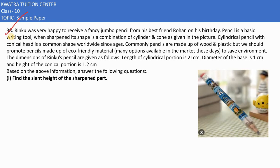Here in the 30th part, it says Rinku was very happy to receive a fancy jumbo pencil from his best friend Rowan on his birthday. A pencil is a basic writing tool. When sharpened, its shape is a combination of cylinder and cone as given in the picture — it has a conical part and a cylindrical part.